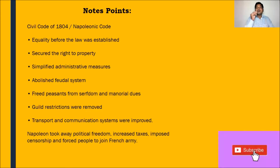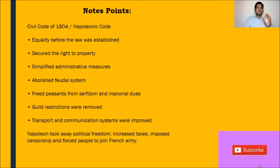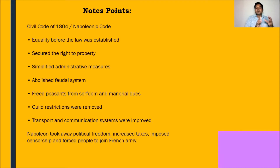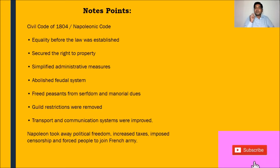The negative point is Napoleon took away political freedom for the people. Very rarely do leaders design a system through which another leader can rise — because of insecurity or intolerance, leaders don't allow others to grow. He increased taxes, imposed censorship, and forced people to join the French armies. The Napoleonic Code or Civil Code of 1804 is a guaranteed question in CBSE board examinations for three marks, so please make a note and understand it very clearly.